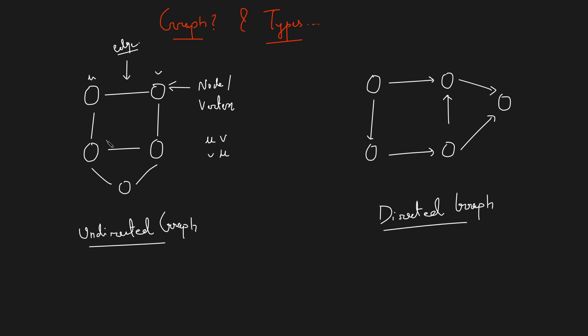There are two initial types of graphs: undirected graph and directed graph. In an undirected graph, the edges do not have any direction. So I can say there is an edge between u and v, and I can also say there is an edge between v and u — the edges are undirected. Such a graph is known as an undirected graph.